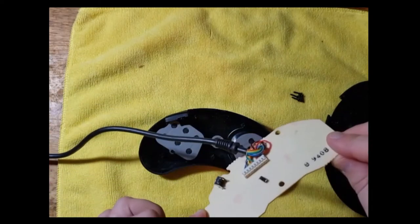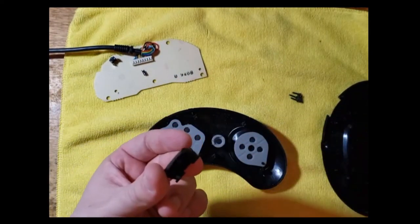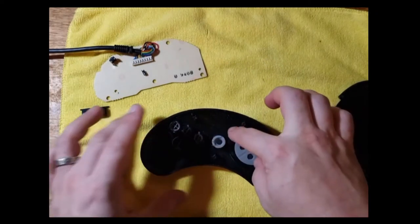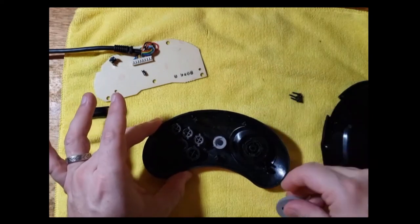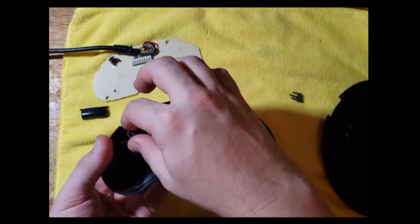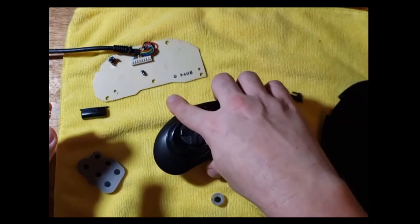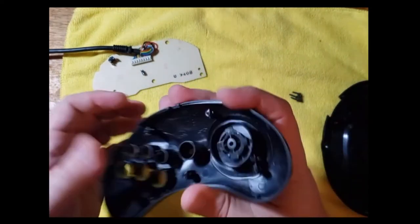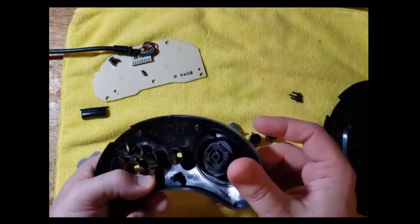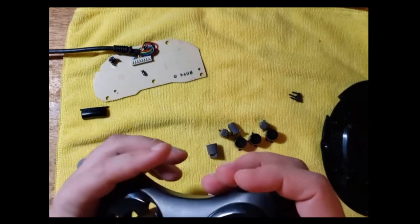Then you can take this button out. Your pads just pop straight off, and then all of your other buttons will just pop straight out. You can actually just flip it and dump it. There you go.